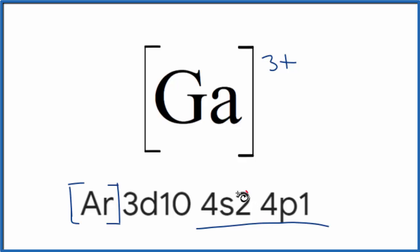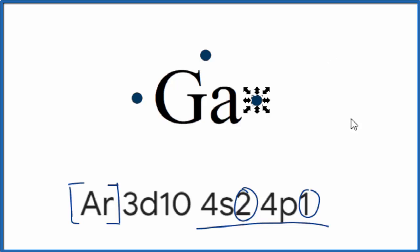These three electrons here, the 4s2, 4p1, they form the chemical bonds. So if we had our electron configuration for just gallium, Ga, we'd have three electrons around it, three valence electrons. And that would be the Lewis structure for gallium.